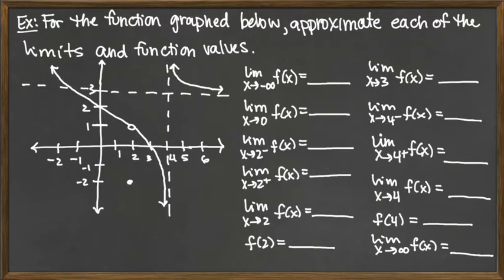In this example, we're given the graph of a function and we're being asked all kinds of information about various limits — one-sided, full limits, as well as function values, and behavior when we're talking about limits going off to positive and negative infinity. So we're going to take these one thing at a time. I'm going to highlight on the graph where we're looking to get our answer in each case.